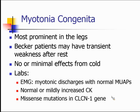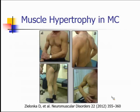Paramyotonia congenita is very sensitive to cold. The EMG in myotonia congenita shows just myotonic discharges without any changes in the motor unit — it doesn't affect the muscle fibers directly in a way that would affect their morphology. They usually have normal or modestly elevated CK levels and missense mutations in the chloride channel one gene. Sometimes they have muscle hypertrophy — this patient doesn't lift weights but has very prominent muscles, something you can see even in little kids with this condition.